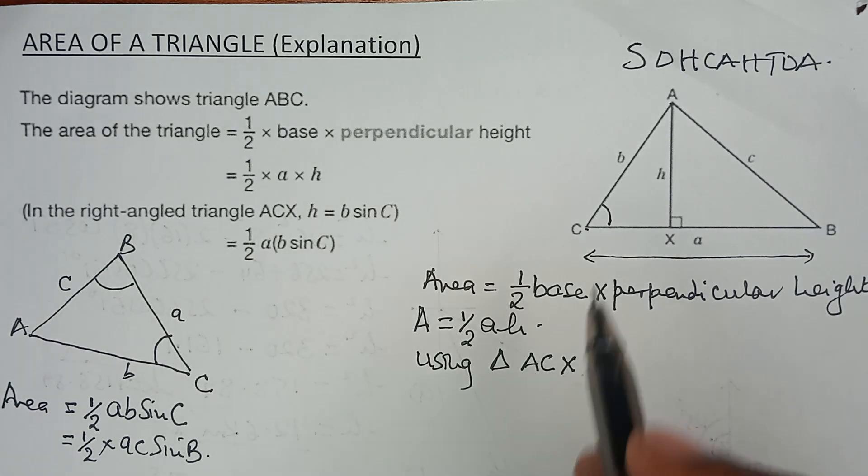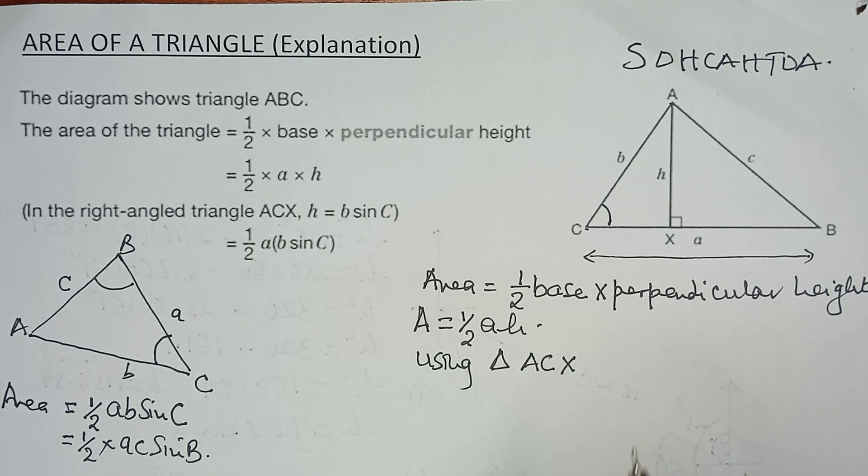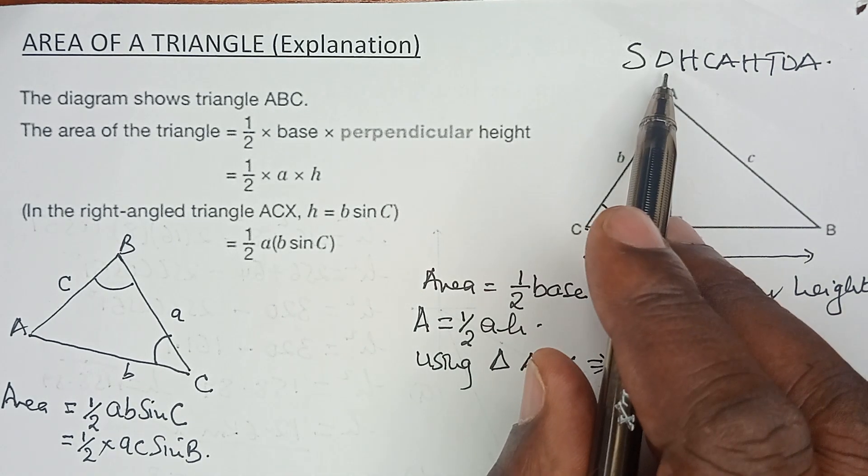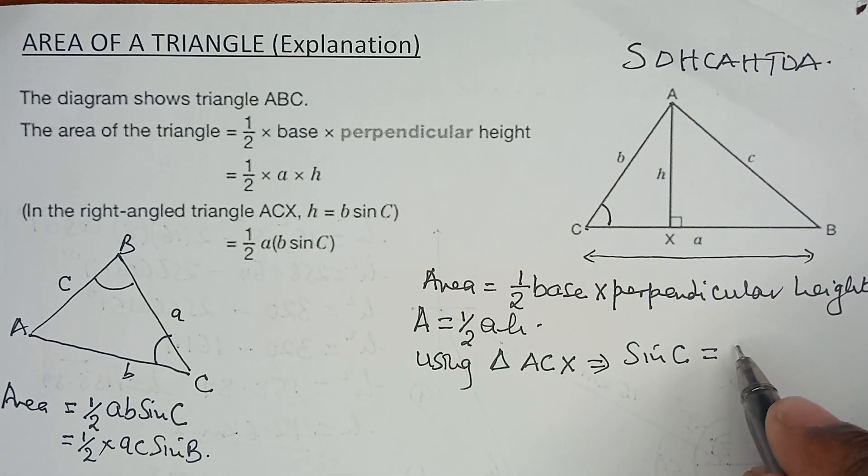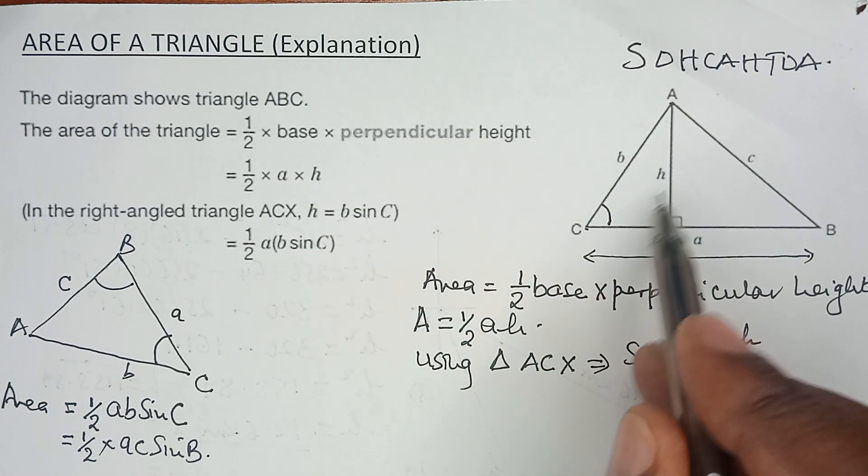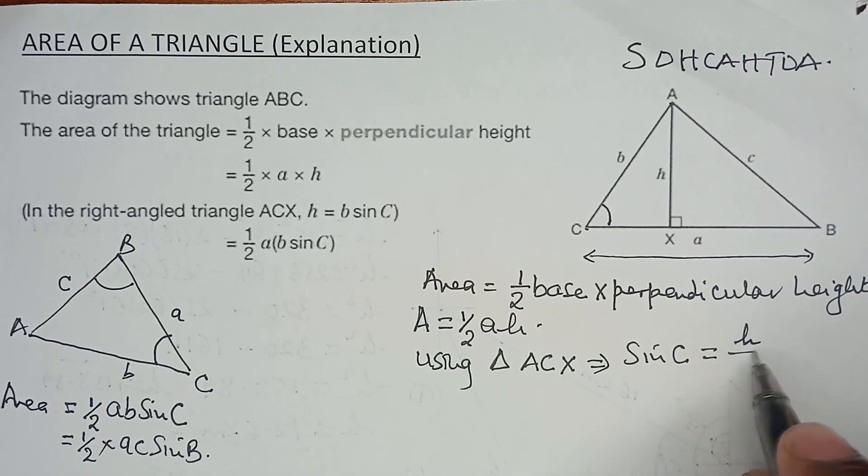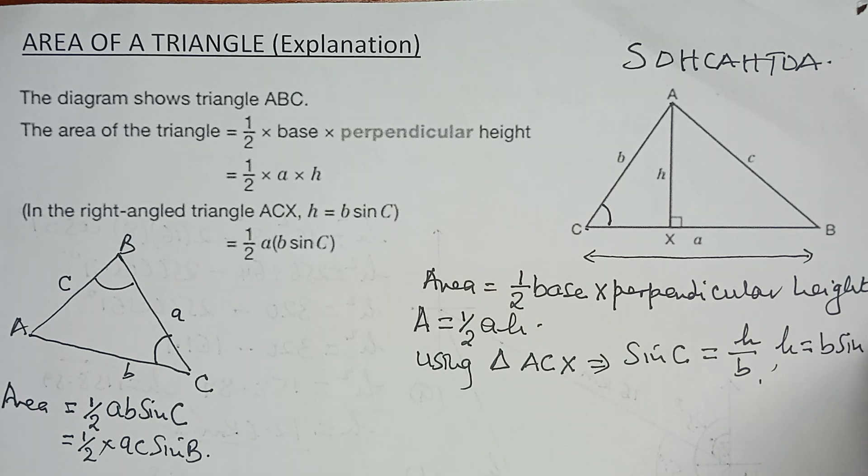Now, using that triangle, we can already see that the sine of angle C is opposite over hypotenuse. The opposite is H, as you can see, the hypotenuse is B. And from here, you can already make H the subject of the formula...